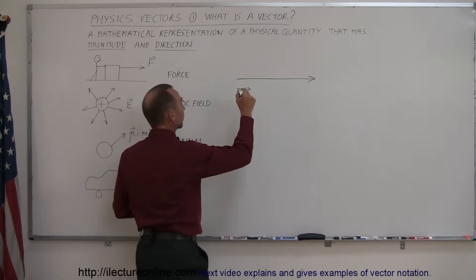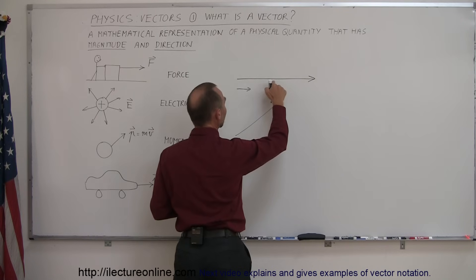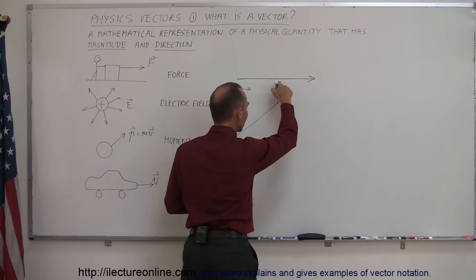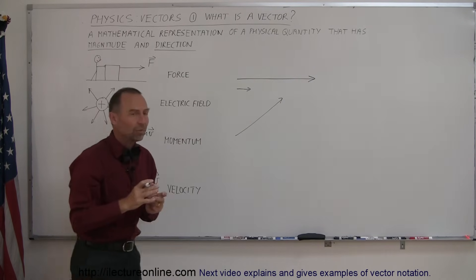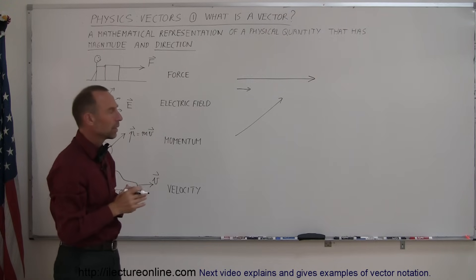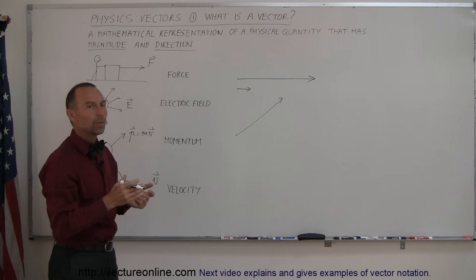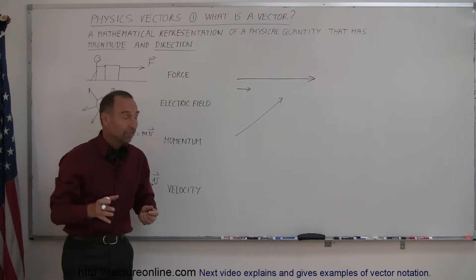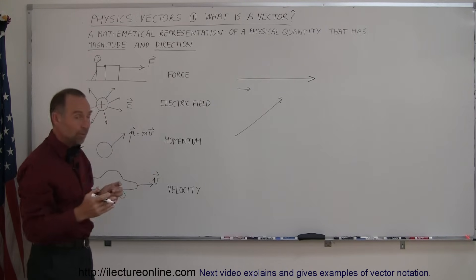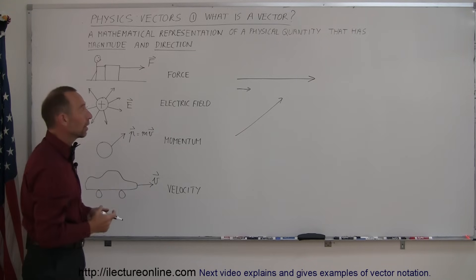Now, if I draw a vector, for example, in this direction, notice that the length of this vector, or the length of this arrow, and the length of this arrow is about the same, so the magnitude would be the same. The direction just simply would be different. So, definitely we use arrows to represent vectors, and the length of the arrow simply represents how large that quantity is.